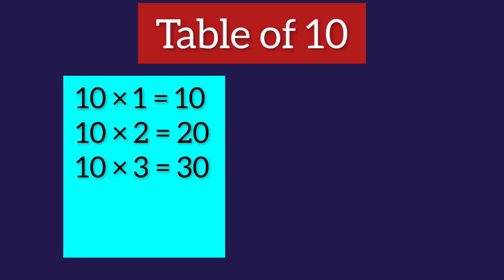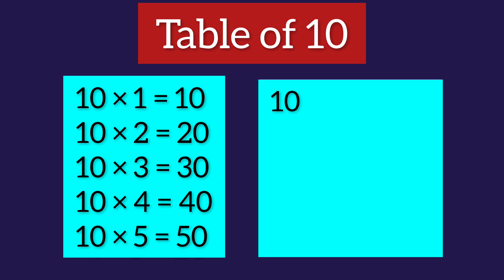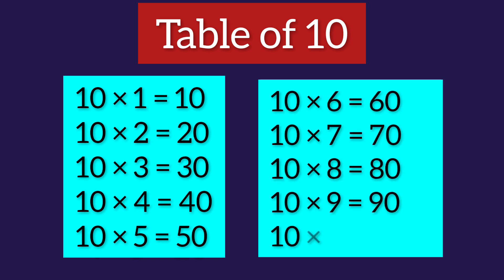Let's learn one more time. Ten ones are 10. Ten twos are 20. Ten threes are 30. Ten fours are 40. Ten fives are 50. Ten sixes are 60. Ten sevens are 70. Ten eights are 80. Ten nines are 90. Ten tens are 100.